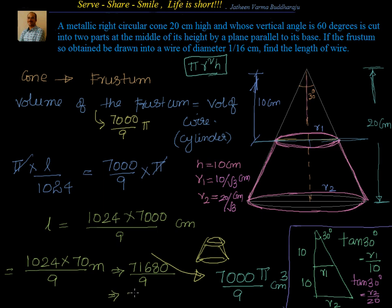Simplifying: 1024 × 7 = 7168, so 1024 × 70 = 71680. Dividing 71680 by 9: 9 × 7 = 63, and working through the division we get a recurring decimal — 4 is recurring. So the length of the wire is approximately 7964.44 meters.